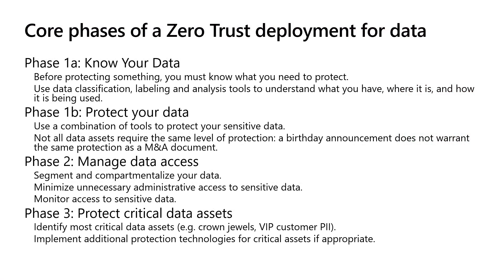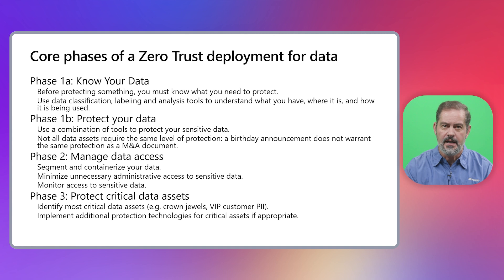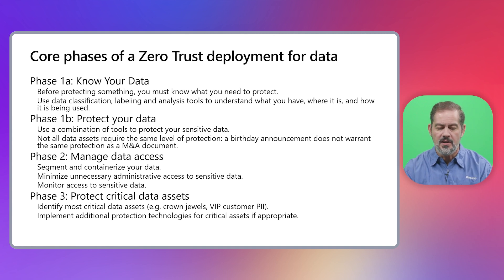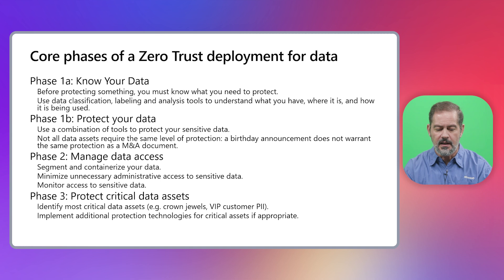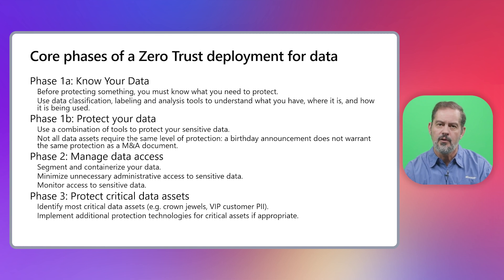You're going to be deploying this workshop in three main phases. The first phase is divided in two — the first one is 'know your data.' You need to use different technologies to understand what data is in the organization's confines and what is critical and sensitive, using data classification technologies and labels to understand what's important, what is sensitive, what is critical.